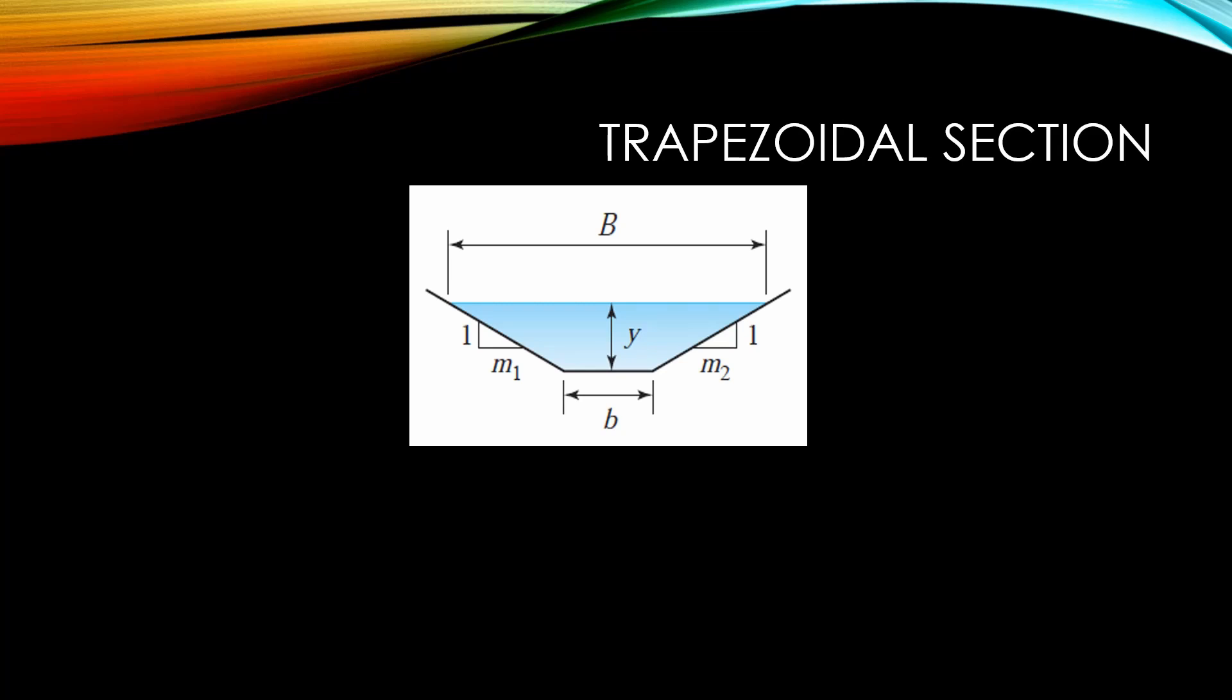This can be done by separating or splitting up the trapezoidal section into one rectangle and two triangles. We know that the area of a rectangle is base times height and the area of a triangle is one half of base times height. Following this, we can get the following equation for the area of a trapezoidal section.